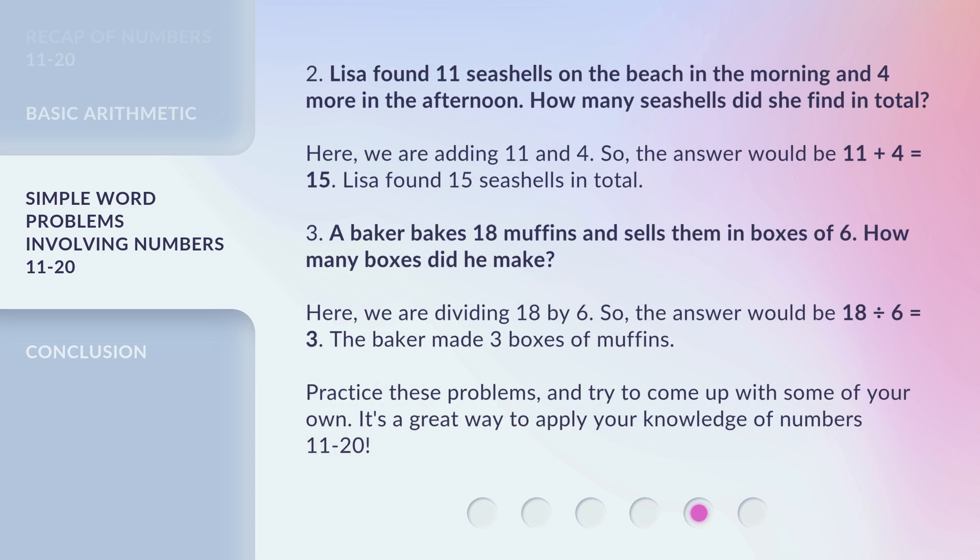Two. Lisa found 11 seashells on the beach in the morning and 4 more in the afternoon. How many seashells did she find in total? Here, we are adding 11 and 4. So, the answer would be 11 + 4 = 15. Lisa found 15 seashells in total.